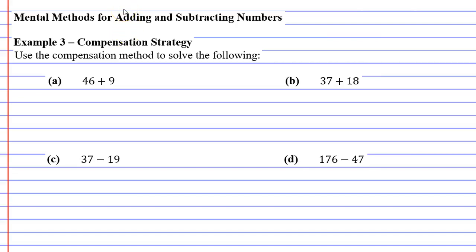We're on to example 3, which is about the compensation strategy, which is another mental method for adding and subtracting numbers, and we're just going to get right to the questions.